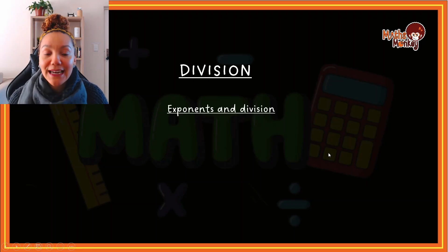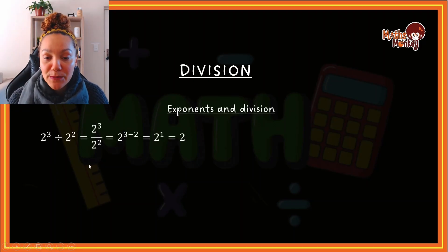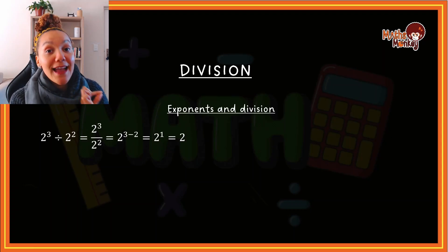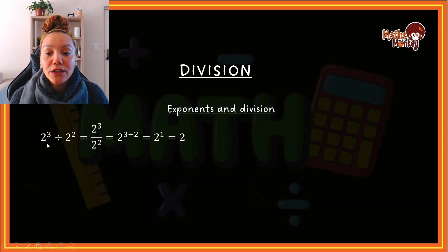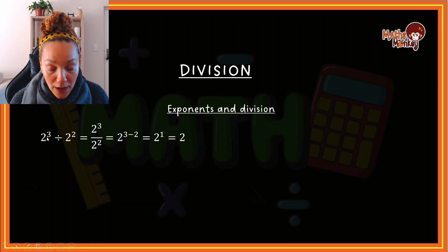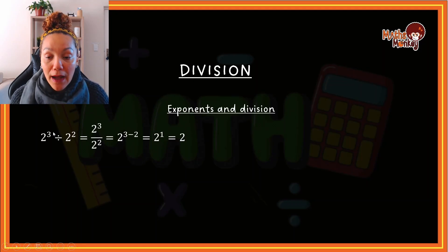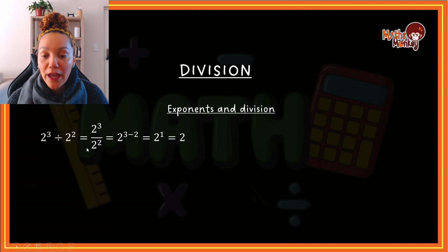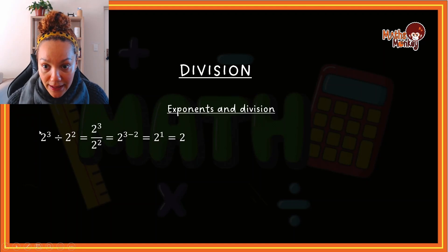I'm going to explain this step by step, so don't worry. It's important that you understand this so that you can apply it when you're using variables in algebra. How division works is: if you have the same bases and you are dividing, you will always subtract the powers. You take the first one's power and subtract the second one's power from it.